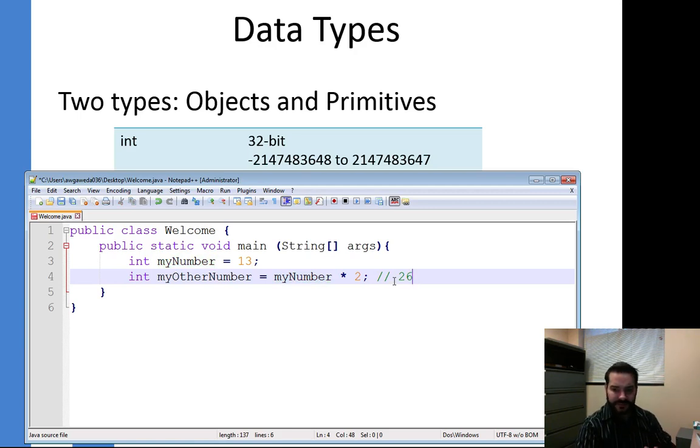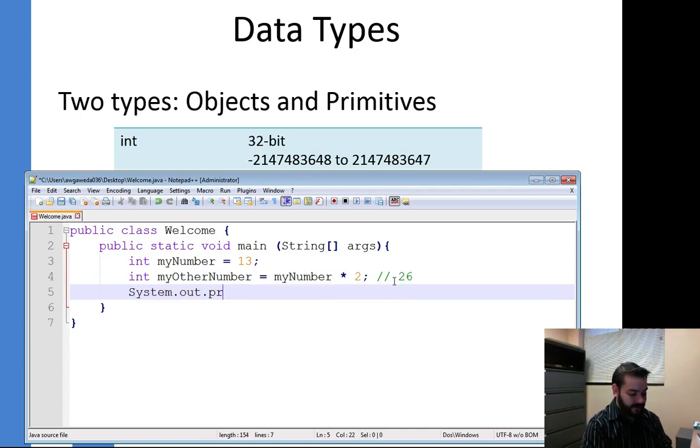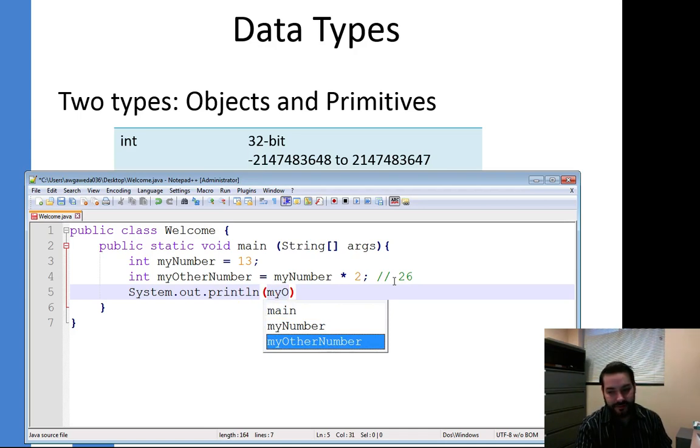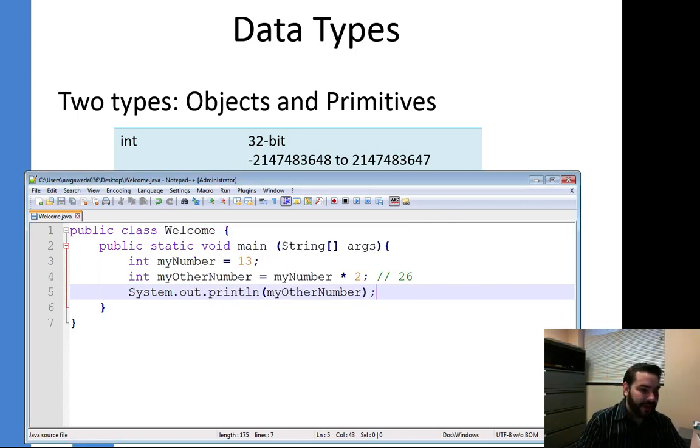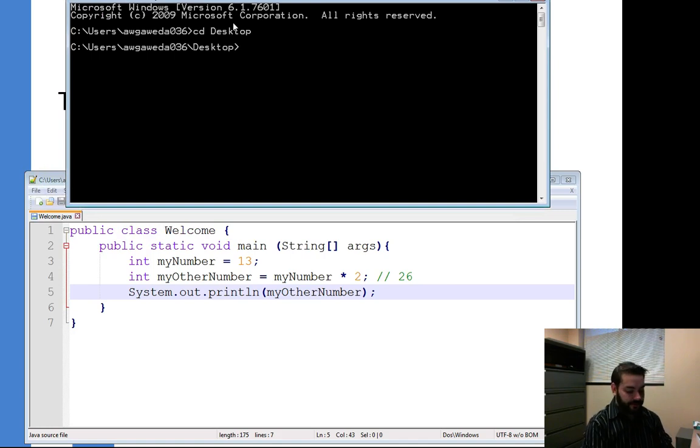Now let's actually take a look at this. I'm going to do a system dot out dot print line really quickly. System dot out dot print line, my other number. Remember you can hit tab and it will autocomplete it for you and you don't have to worry about that. So let me save that and let me pull up my command line because once again I do need to compile this. Compile early, compile often. I've made a change so suddenly javac Welcome.java. It compiled fine, that's what I like to see. Java Welcome. As soon as I hit enter I should see 26. Good, that's exactly what I wanted.